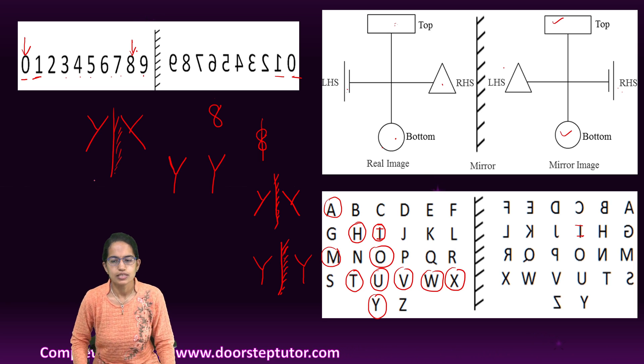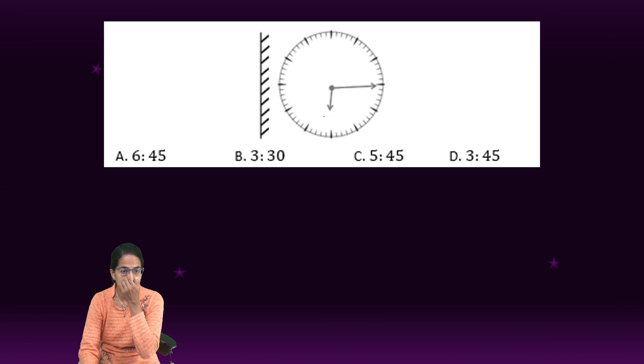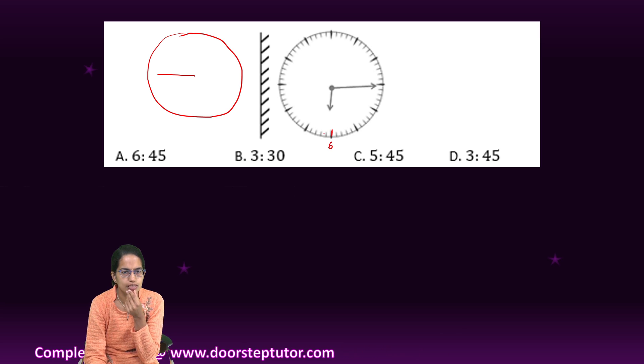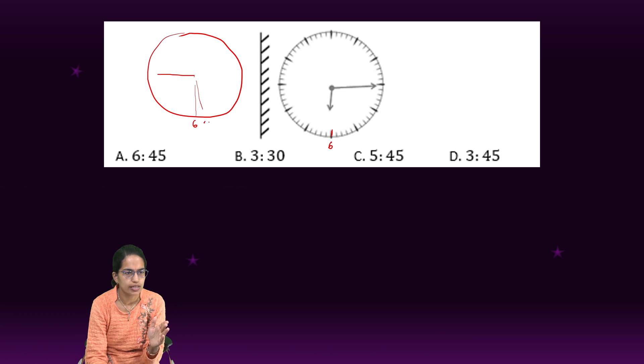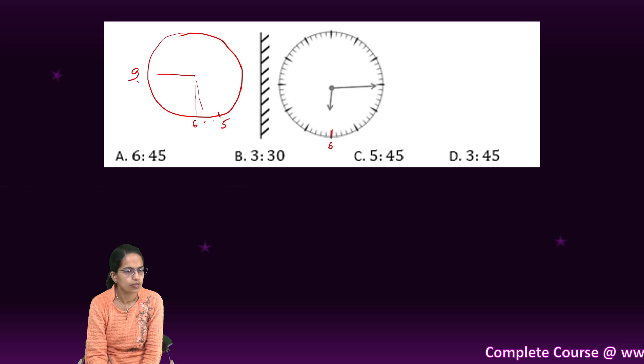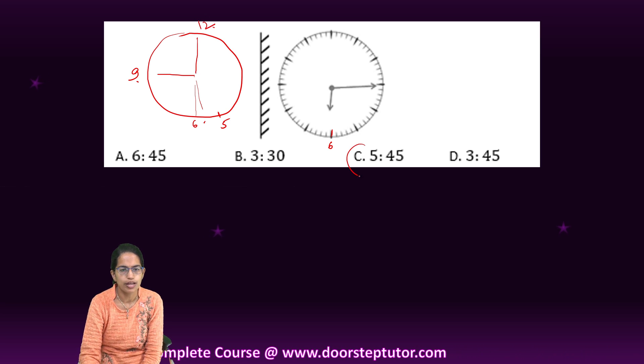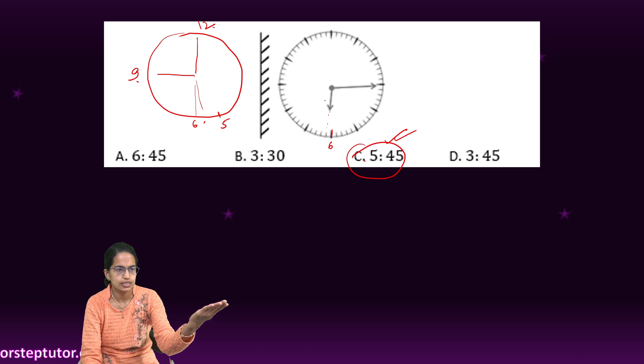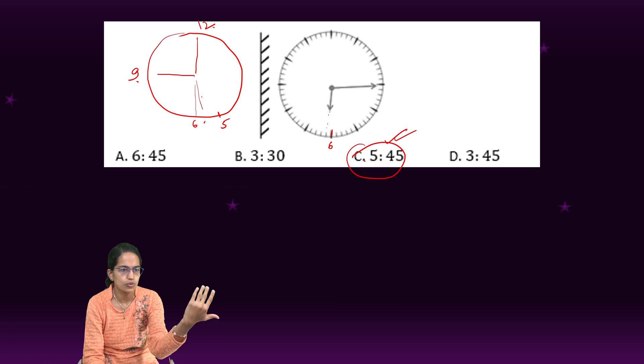Now here it's a watch. Now watch, if I see the mirror image of this watch, what would it look like? It would look like this. And since it is after six, a little after six, so this is six, it would be little before six. So somewhere here. So this is five, six, and this is nine. So it would be between six and five and six.